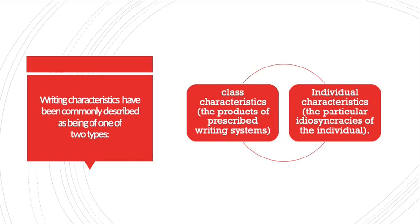Before we move on to class characteristics and individual characteristics — which are the main important characteristics present in any handwriting — we first need to know the basic principles on which handwriting examination is based. First, every handwriting has individuality. No two persons can write exactly alike, because each person has different upbringing, emotional quotient, and moreover some people have been trained from childhood to write words in different ways, while some people incorporate embellishments in their handwriting.